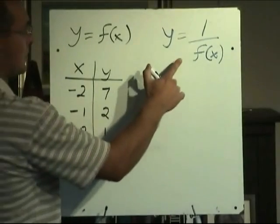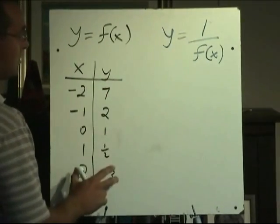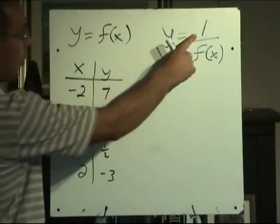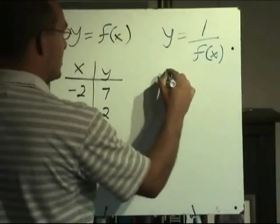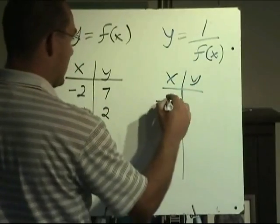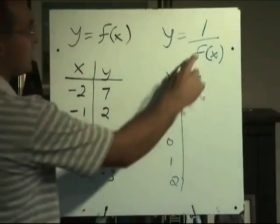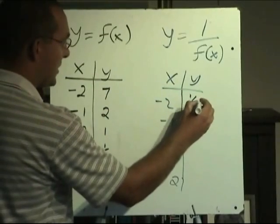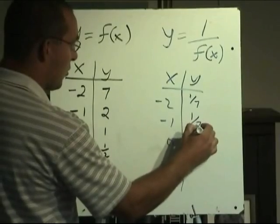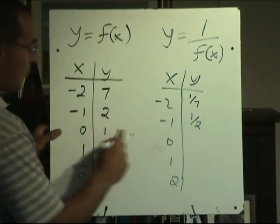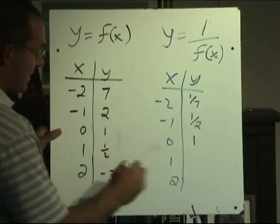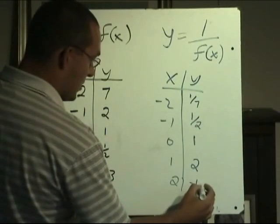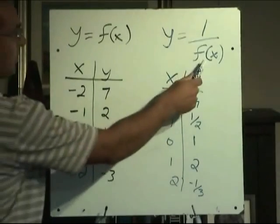All that reciprocal means is we take the existing function and look at its y values — leave all the x values the same — and the new y values become 1 divided by the old y values. So for the same x values, the new y values equal 1 divided by the old y values: 1/7, 1/2, 1 divided by 1 is 1, 1 divided by a half is 2, and 1 divided by negative 3 is negative 1/3.